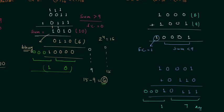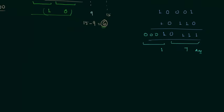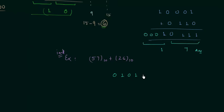Now we will move to the last example, which is very important. In this example we have to perform the addition 57 plus 26. To represent 57: 5 is represented by 0101 and 7 is represented by 0111. 2 is represented by 0010 and 6 is represented by 0110. So this is the representation for 57 and this is the representation for 26.